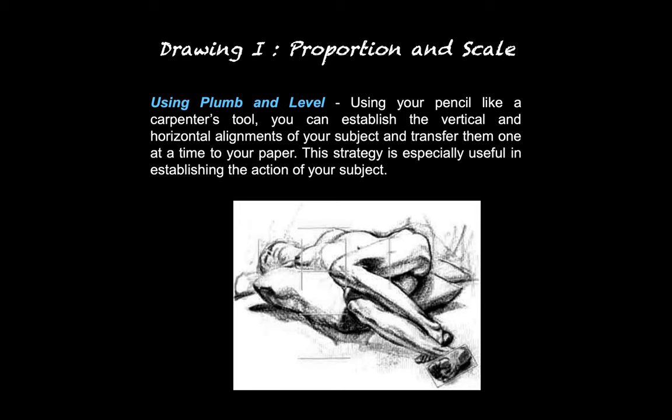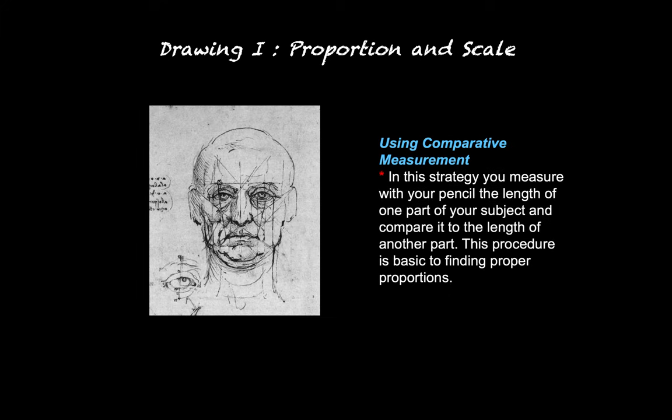Using plumb and level: use your pencil like a carpenter's tool. You can establish the vertical and horizontal alignments of your subject and transfer them one at a time to your paper. This strategy is especially useful in establishing the action of your subject. Comparative measurement is something I find very useful, particularly when drawing multiple objects on a page, a still life, or even multiple figures. It's a strategy where you measure with your pencil the length of one part of your subject and compare it to the length of another part — basic to finding your proper proportions.